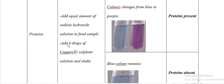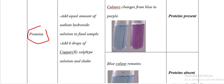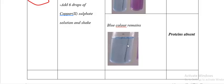The next food substance is proteins. Add an equal amount of sodium hydroxide solution to the food solution or food sample, then add 6 drops of copper sulfate solution and shake. If the colour changes from blue to purple, proteins are present. If the blue colour remains, proteins are absent.